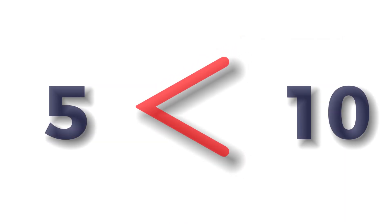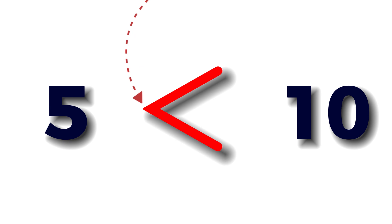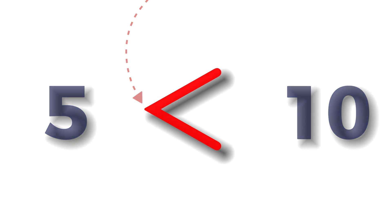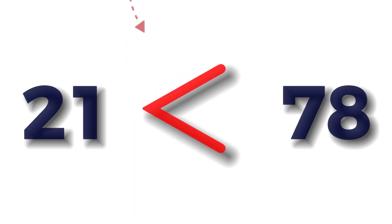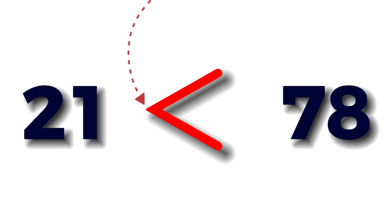Have a look at these examples. Point at the smaller number — five is the smaller number, so the sign is pointing towards it. Point at the smaller number — one hundred and nine is the smaller number, so the sign is pointing towards it.